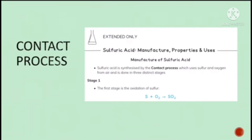Contact Process. What is the contact process? It is the manufacture of sulfuric acid. Stage one is the oxidation of sulfur, which produces sulfur dioxide: S + O₂ → SO₂.